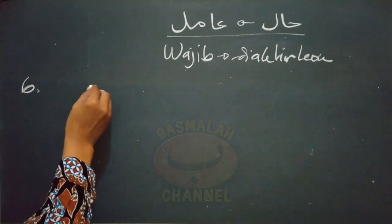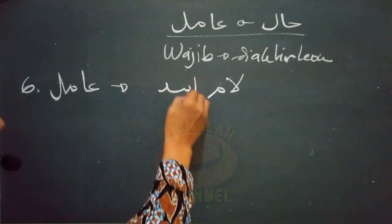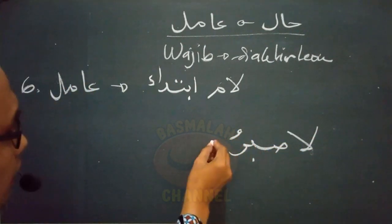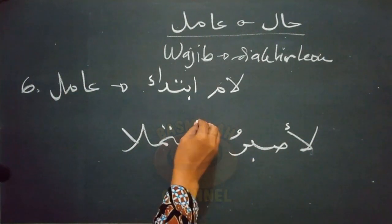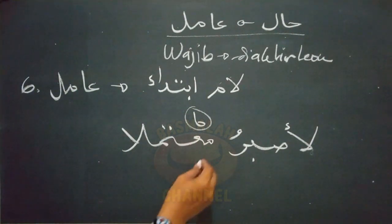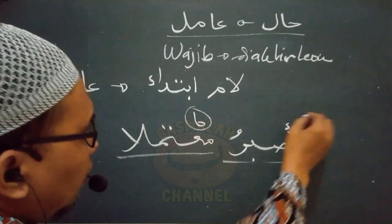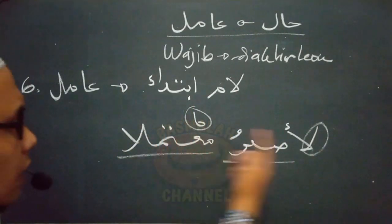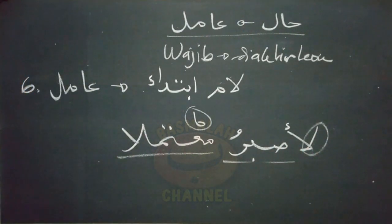Kondisi keenam adalah manakala amil didahului oleh lam ibtida'. Contohnya seperti lafad 'la'ashriru mu'tamilan': sungguh akan sabar aku padahal dikerjakan — maksudnya kesabaran yang dijanjikan itu akan benar-benar dilaksanakan. Lafad 'mu'tamilan' di sini adalah hal sementara amilnya adalah lafad 'ashriru' yang didahului oleh lam ibtida'. Maka hal tidak boleh didahulukan dari amilnya. Tidak boleh kita katakan 'mu'tamilan la'ashriru', karena keberadaan lam ibtida' menuntut kalimat yang diiringinya untuk berada di awal susunan kalimat.